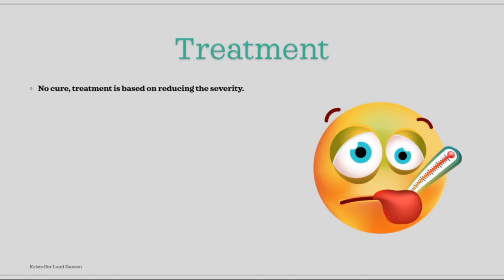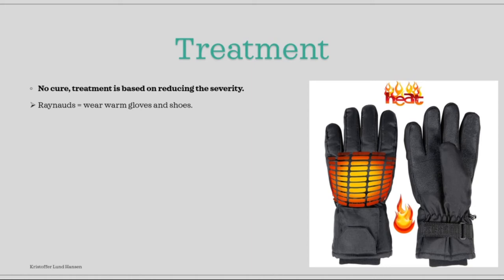To reduce Raynaud's and limit how often it occurs, it can be useful to limit cold exposure to the feet and hands — warm gloves and shoes can reduce the frequency quite drastically. For arthritis and myositis, general use of NSAIDs and corticosteroids during bad periods can be attempted.